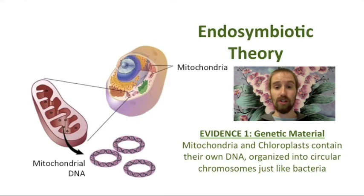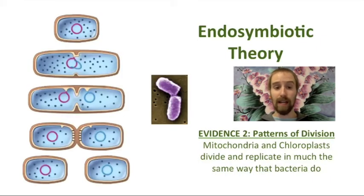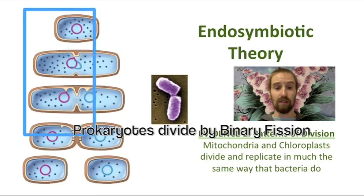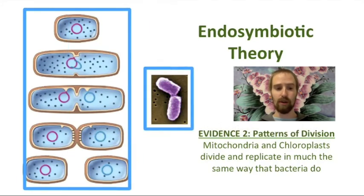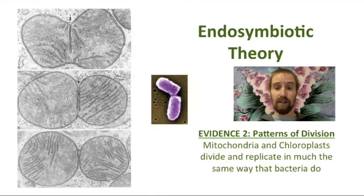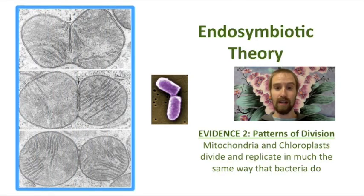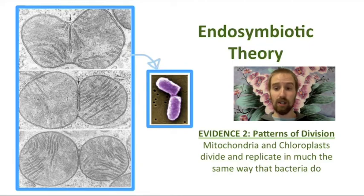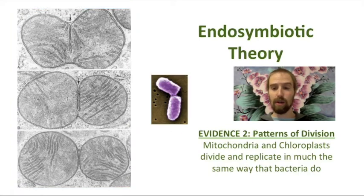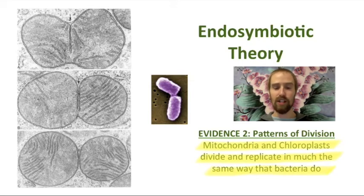Another piece of evidence that supports this theory has to do with how mitochondria and chloroplasts divide and replicate themselves during cell division. Bacteria use a process called binary fission in order to divide and replicate themselves, as depicted here in this figure and in this false color electron micrograph. When a eukaryotic cell prepares to divide, the mitochondria and chloroplasts inside divide and replicate themselves in a process very much like binary fission — right down to how the DNA inside is replicated. This process is quite different from how the eukaryotic cells themselves divide, and since mitochondria and chloroplasts divide by the same process used by bacteria, this supports the theory that they originated from bacteria and inherited this pattern of division from their distant, free-living ancestors.